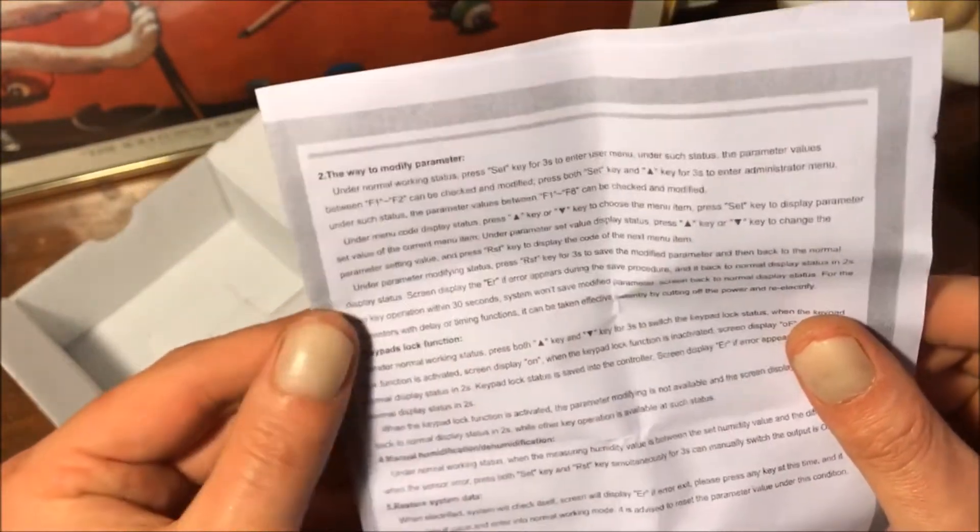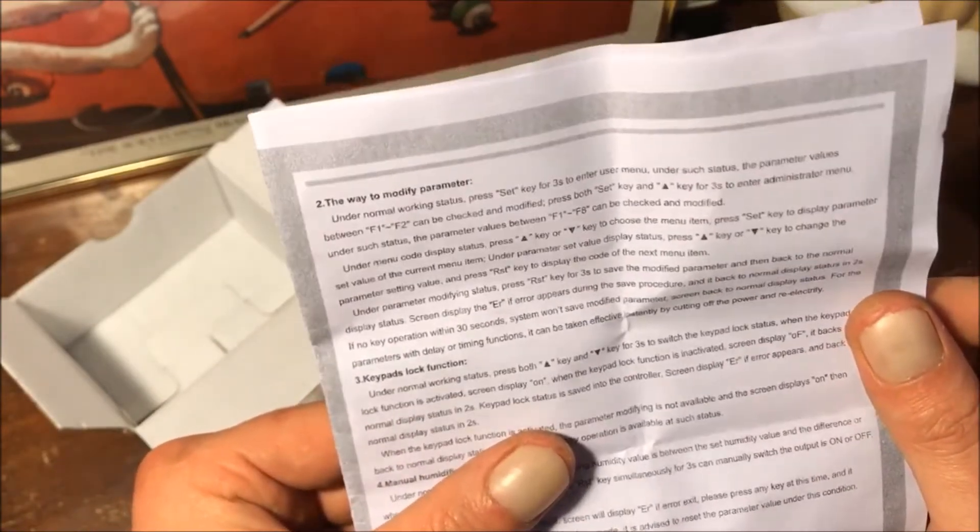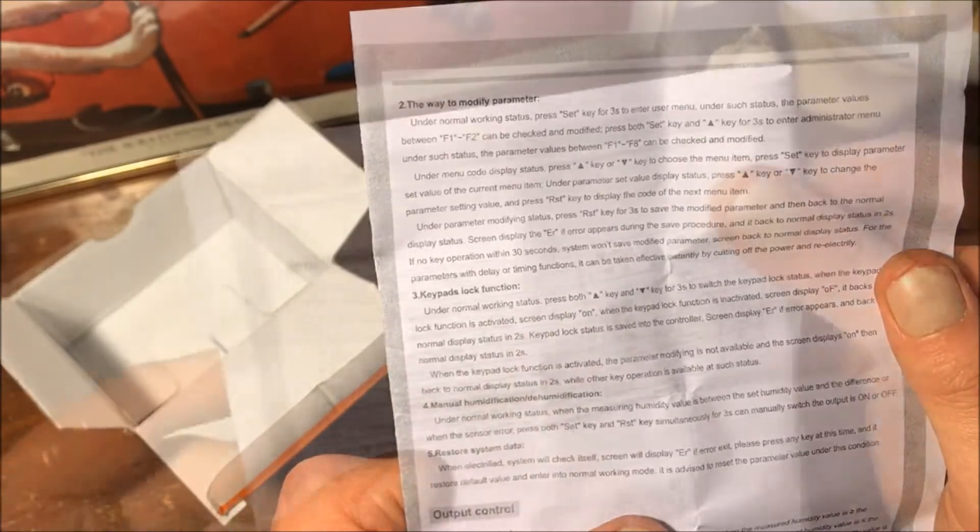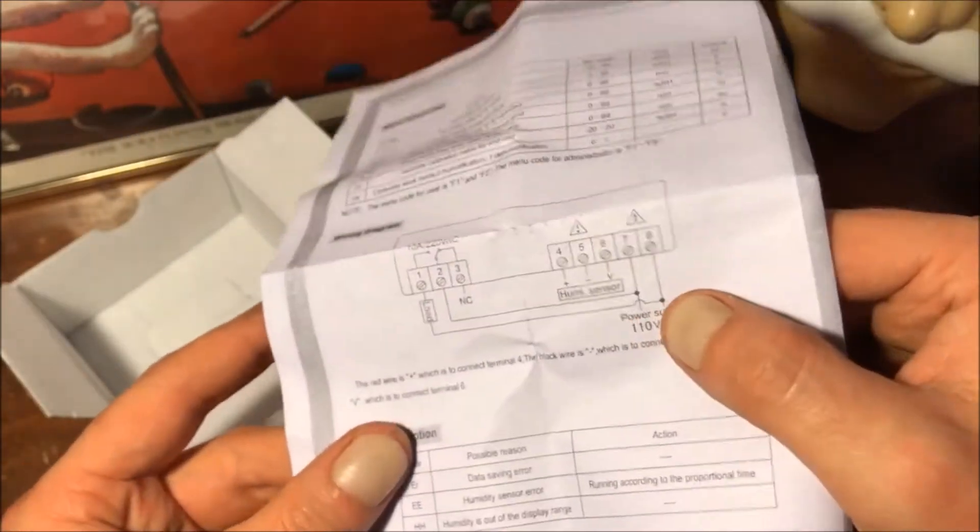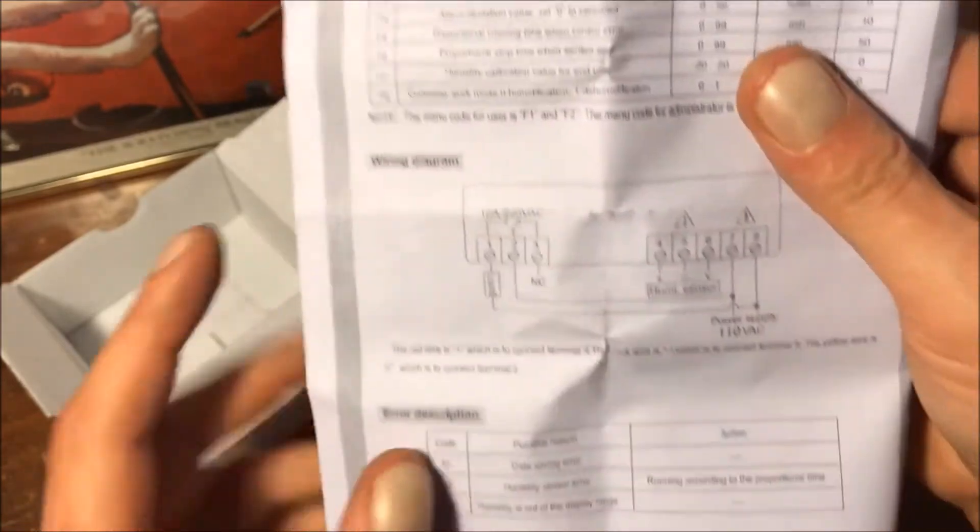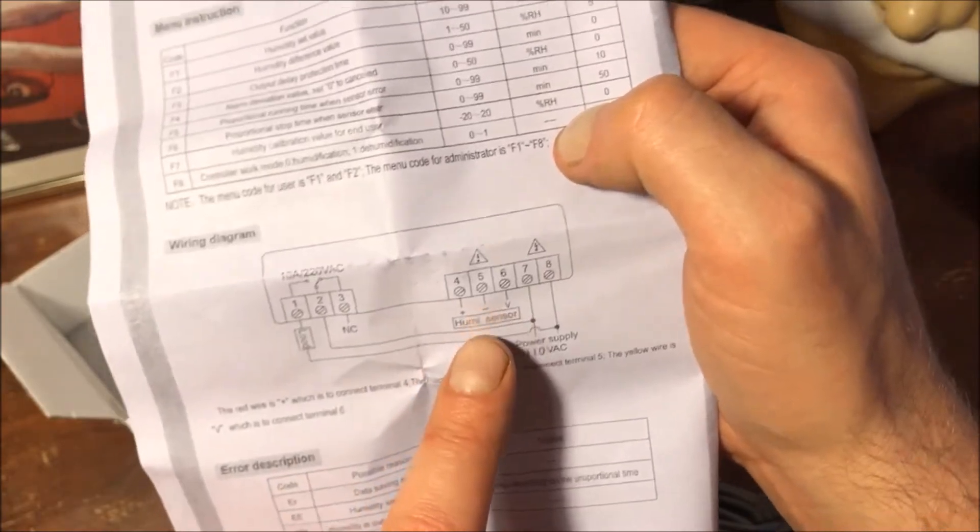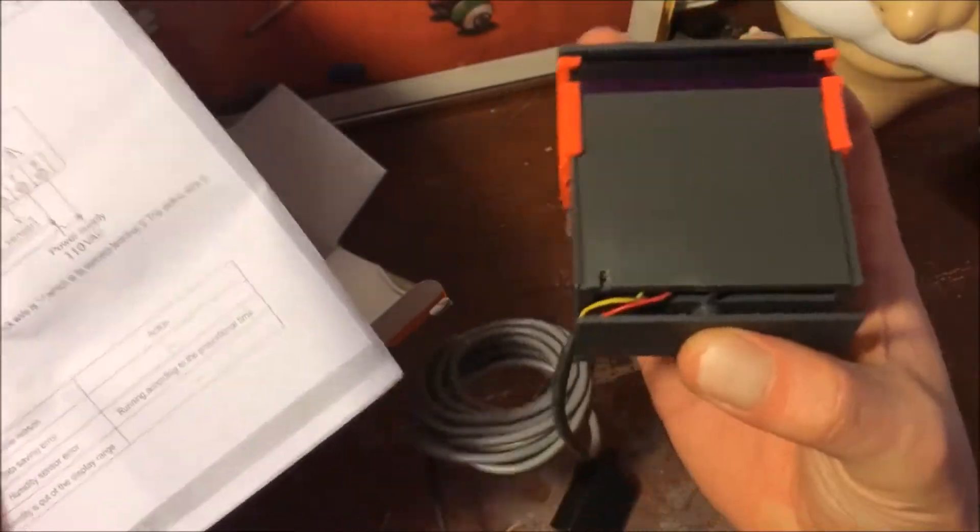So how to set it up—I'm guessing it's the same thing as the temperature controller. You just have a set point and an offset value. Menu humidity set. It's the same wiring diagrams. The red wire is positive which connects to terminal 4.